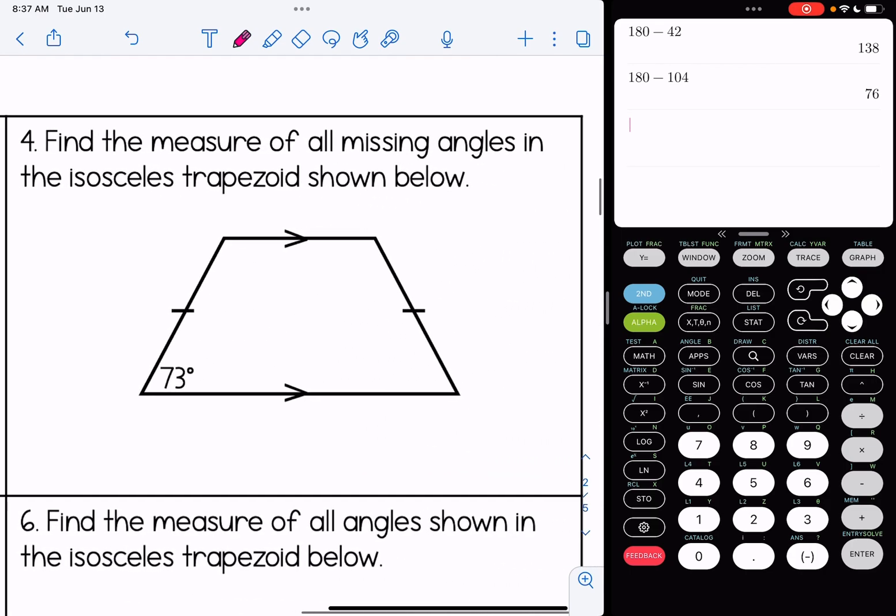Alright, number four, find the measure of all the missing angles in the isosceles trapezoid shown below. Well, we know in an isosceles trapezoid that the base angles are congruent. So this is going to give me 73 down here. The two top base angles are also congruent. We just have to figure out what they are.